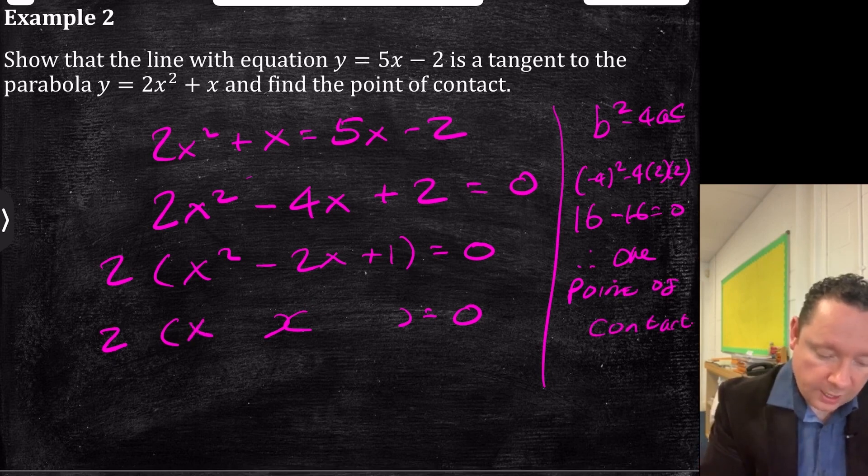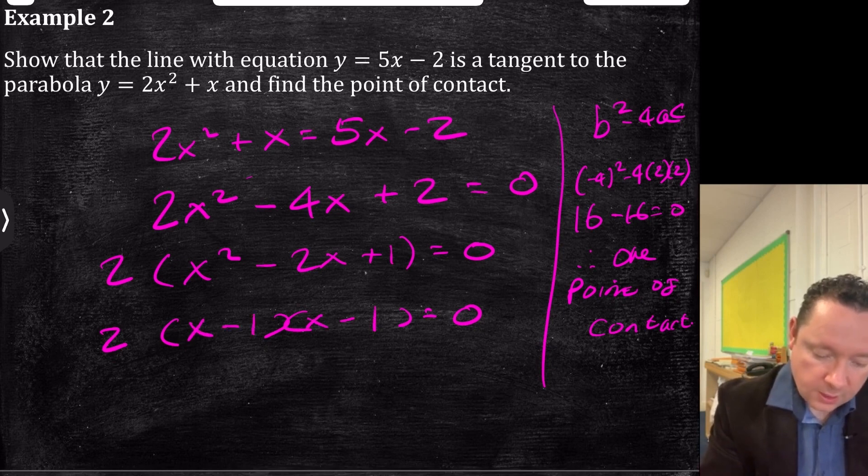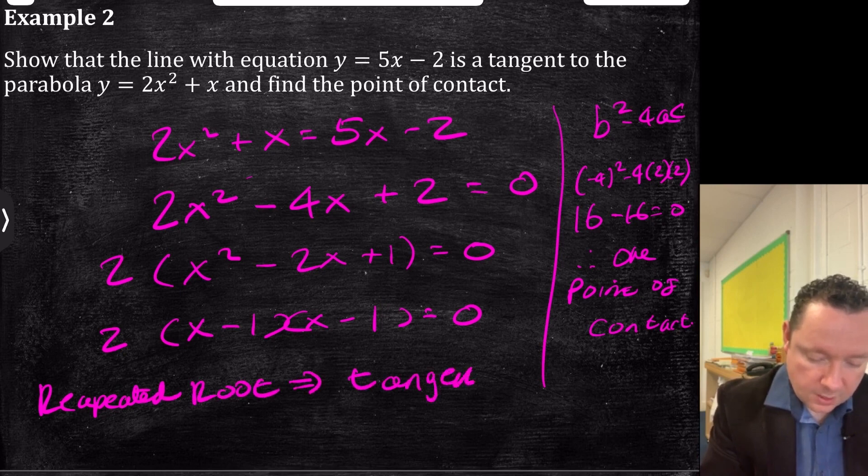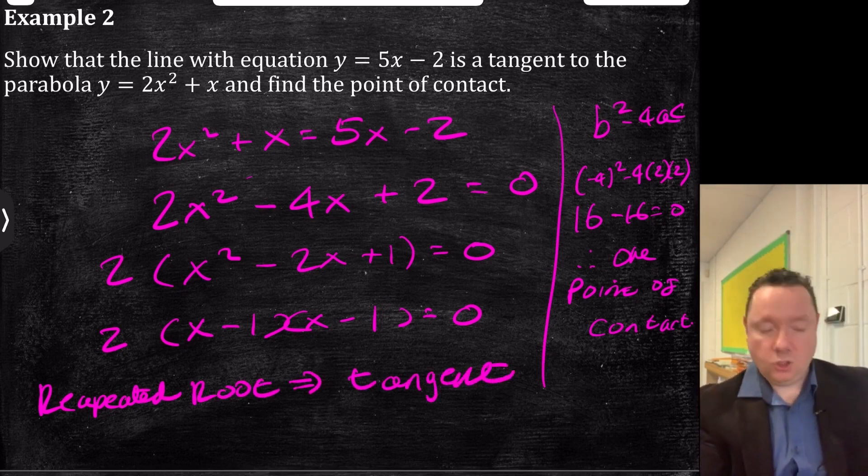I would just get the roots this way, and you've got (x - 1)(x - 1). Since it's a repeated root, we can just then say that that implies tangent. And then, we just solve it.